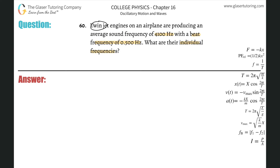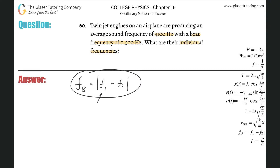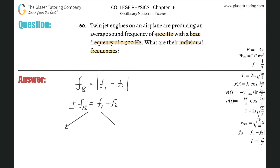So two engines are producing a beat frequency. Let's look at the formula for beat frequency: the beat frequency equals the absolute value of F1 minus F2. To get rid of the absolute value, we take the plus and minus value, giving us two equations. The positive beat frequency equals F1 minus F2, and the negative beat frequency equals F1 minus F2.